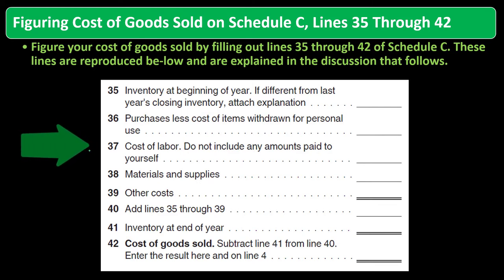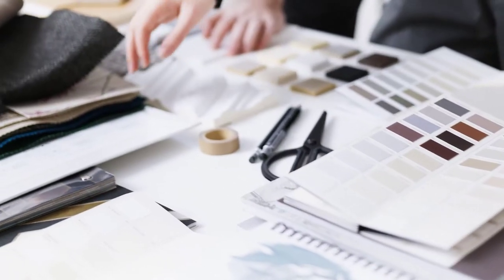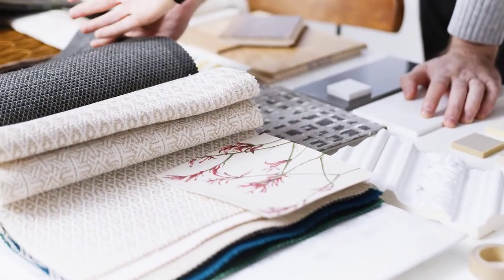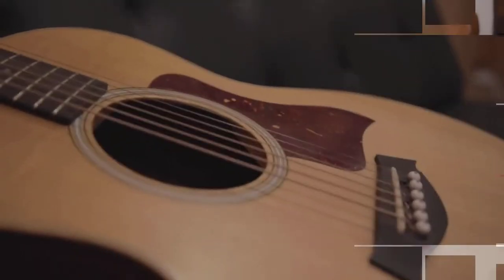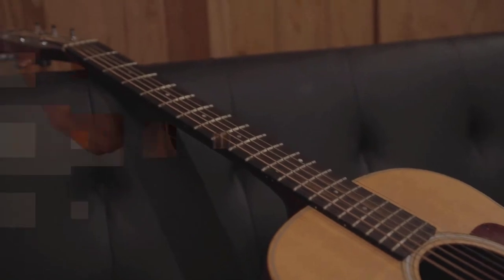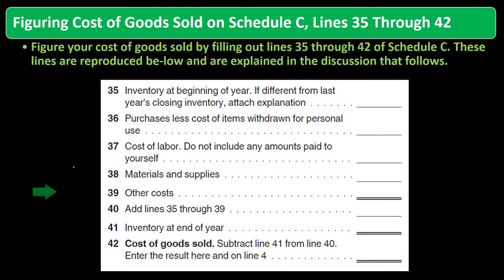Then Line 38, materials and supplies — because if you're making something, you've got materials and supplies beyond just the purchase item. They're not the end product you're marking up and selling; they're supplies like the wood if you make a guitar. The cost of labor covers what you pay people to assemble the guitars. Line 39 covers other costs, which you might think of as overhead.